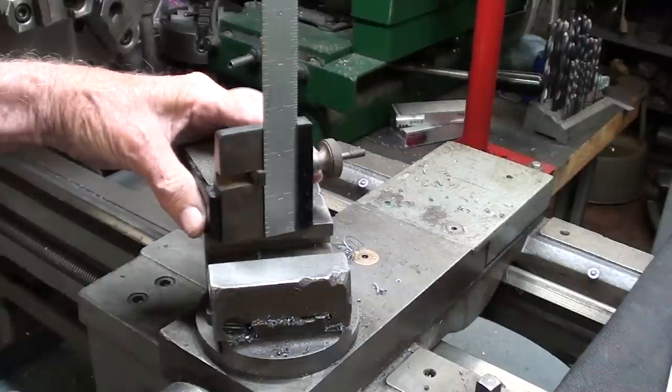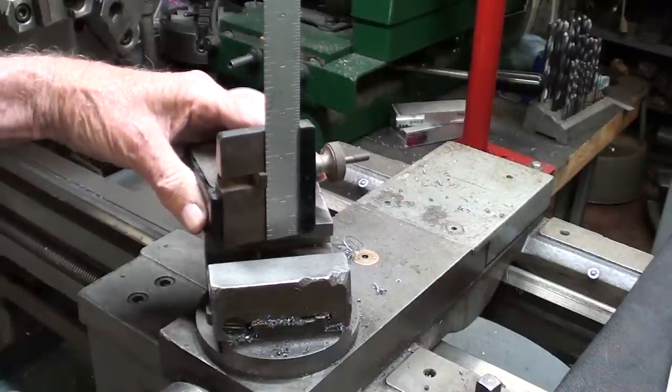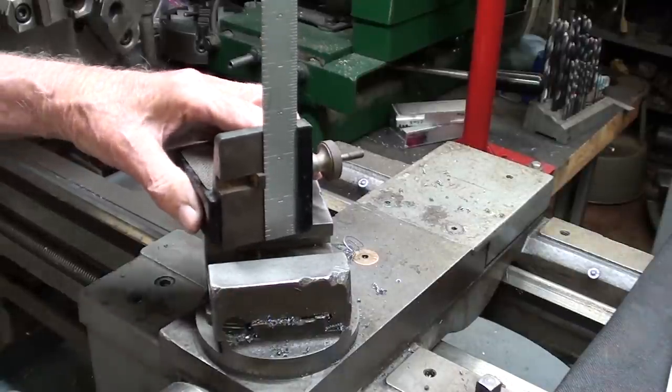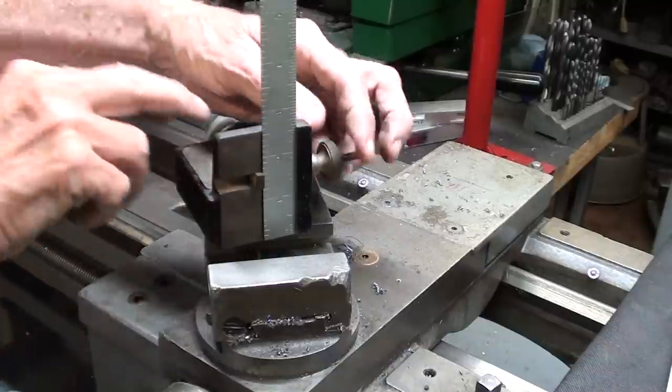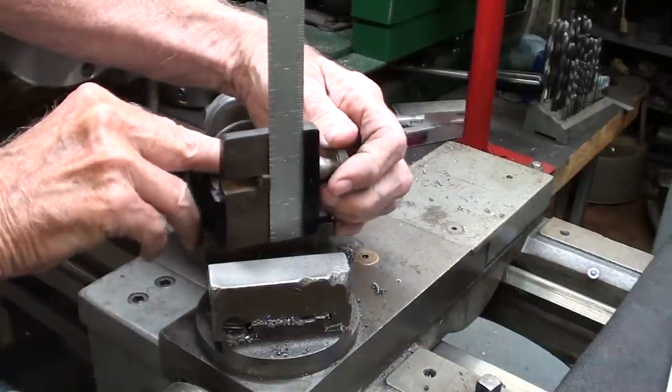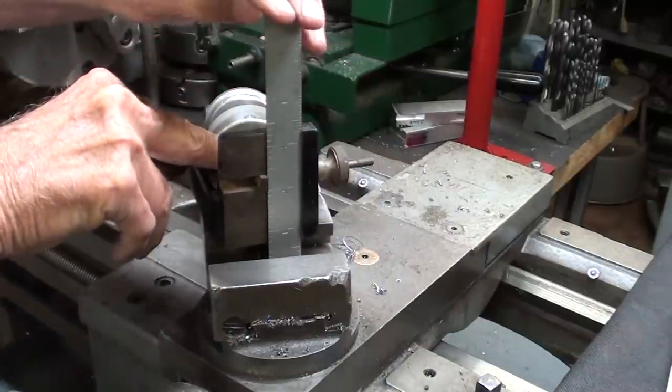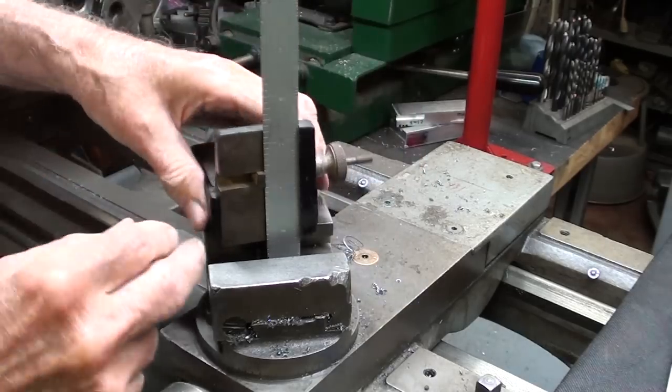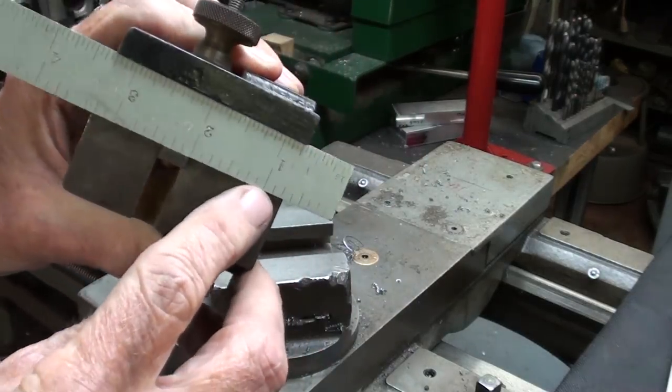But Mr. Pete, that looks like kind of a useless tool. What else can it be used for? Well, it can be used to check the depth of a slot or a piece of work by loosening up the knob, moving the ruler down, and reading it right off of here.